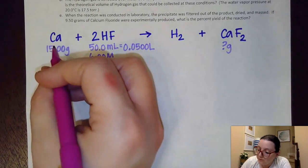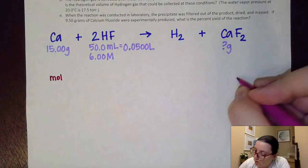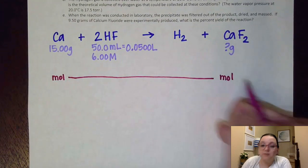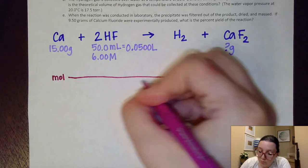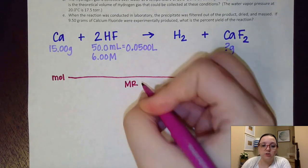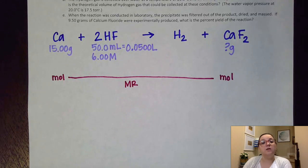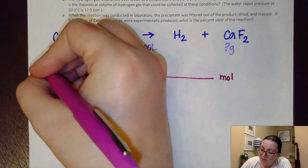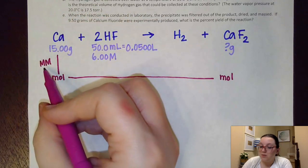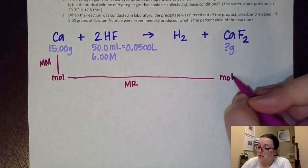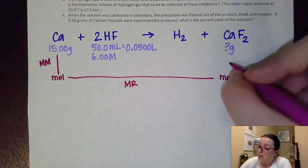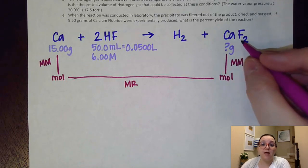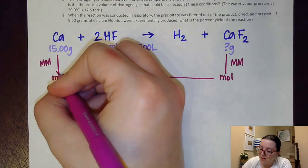I'm going to map out calculating calcium to calcium fluoride and then hydrofluoric acid to calcium fluoride, and after the calculations I'll compare the two answers. For the calcium map: I need a mole-to-mole ratio every time to get between substances — I'll write MR for mole ratio. To get between grams and moles I need a molar mass step, abbreviated MM — here using the molar mass of calcium. On the product side I also have a step between moles and grams, so I'll need the molar mass of calcium fluoride. That calculation will have three steps.